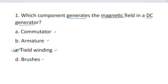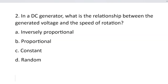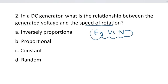Next question. Question number 2. In a DC generator, what is the relationship between the generated voltage and the speed of rotation? Option A, inversely proportional. Option B, proportional. Option C, constant. And option D, random. Which one of the following options is correct?